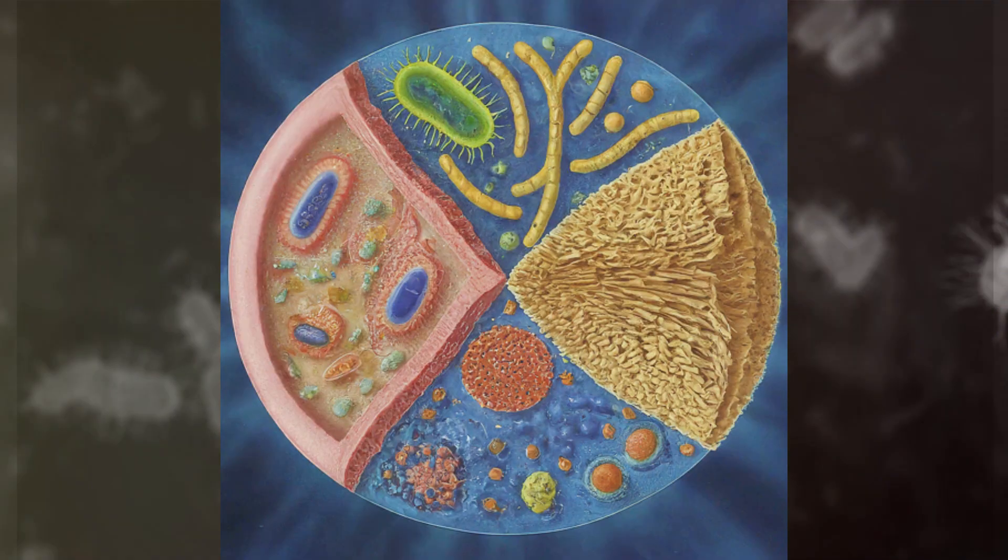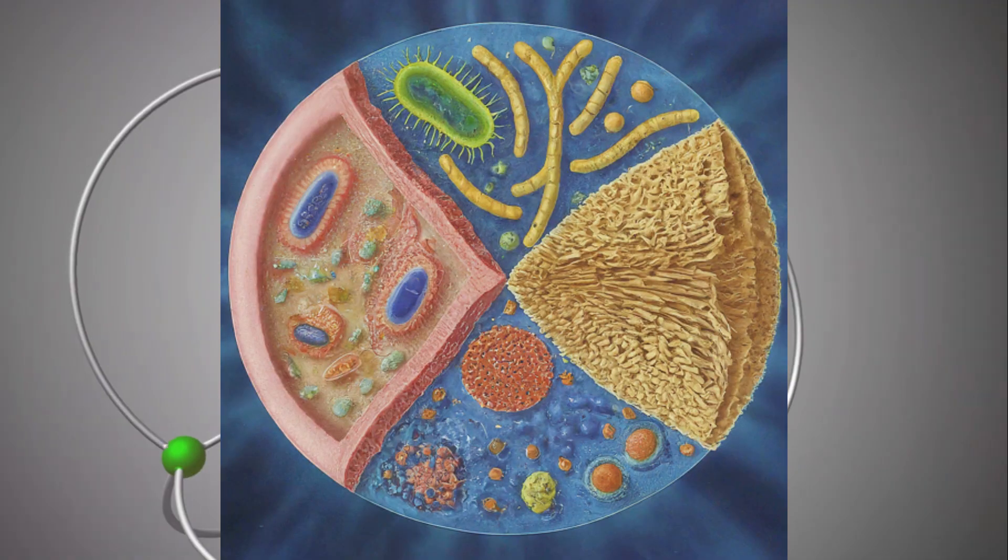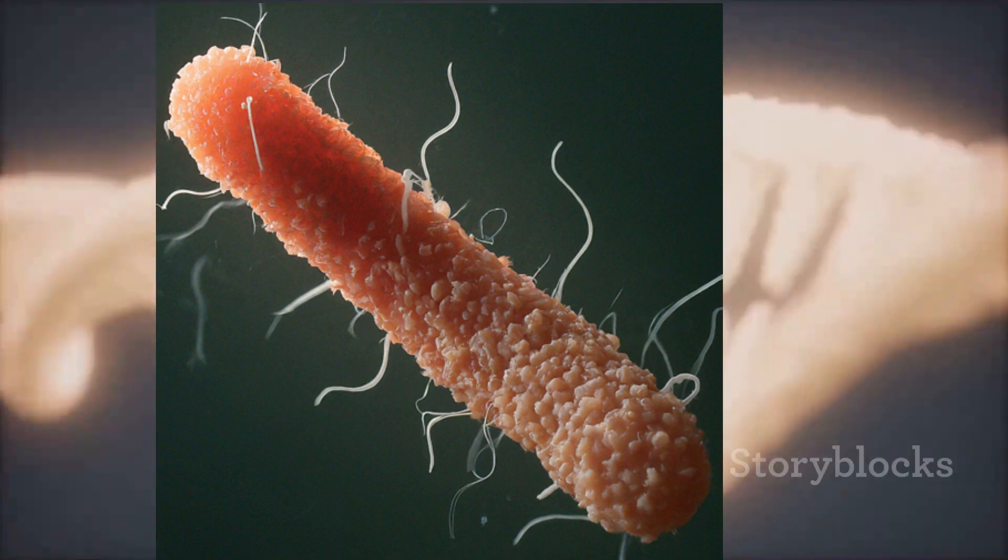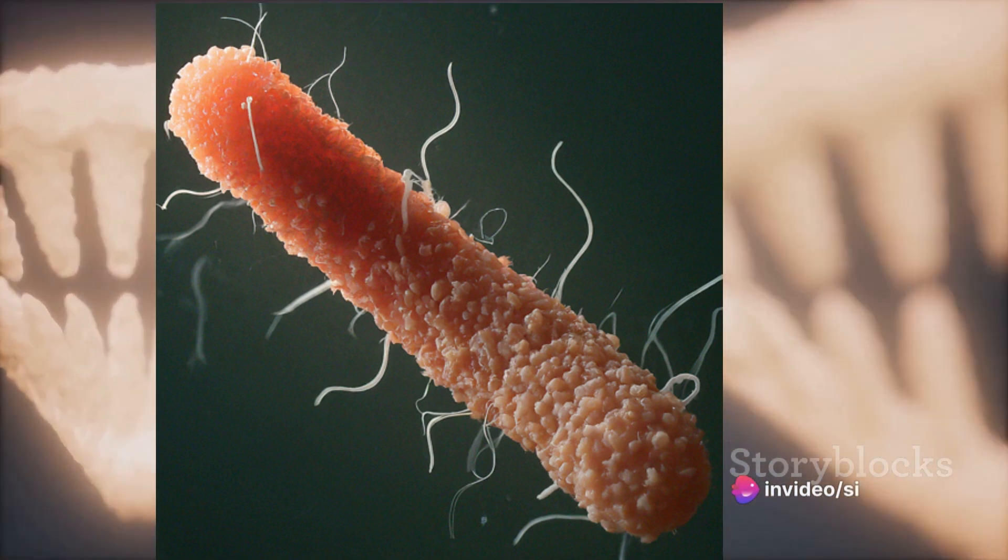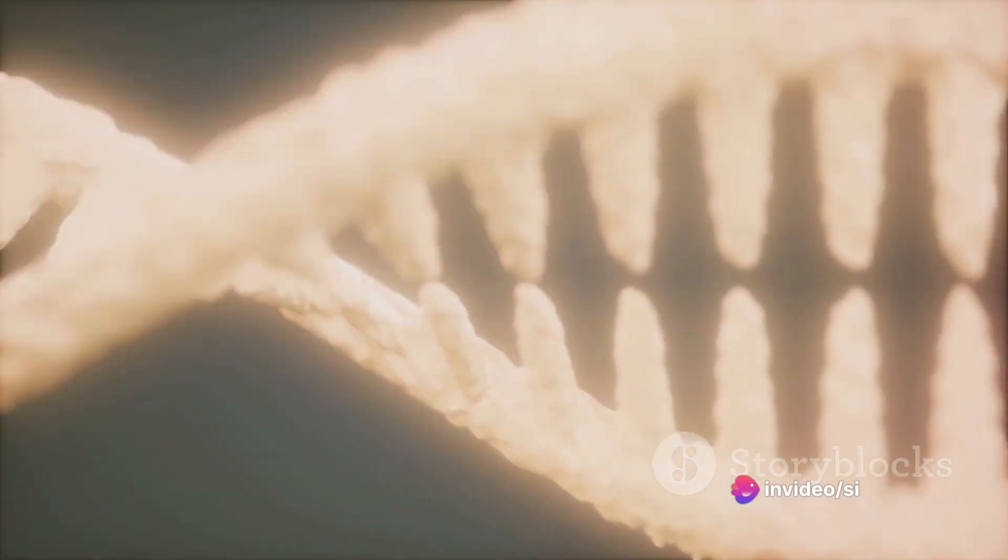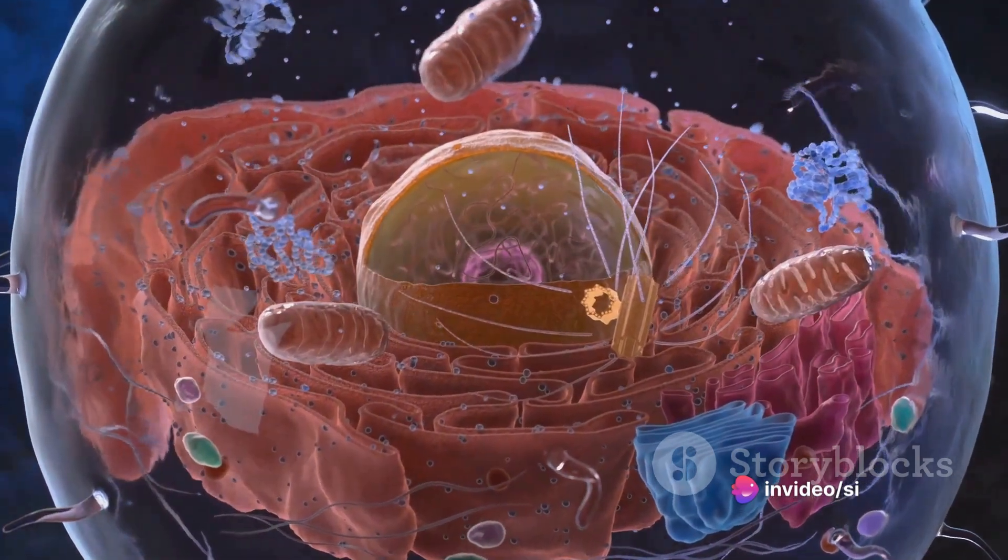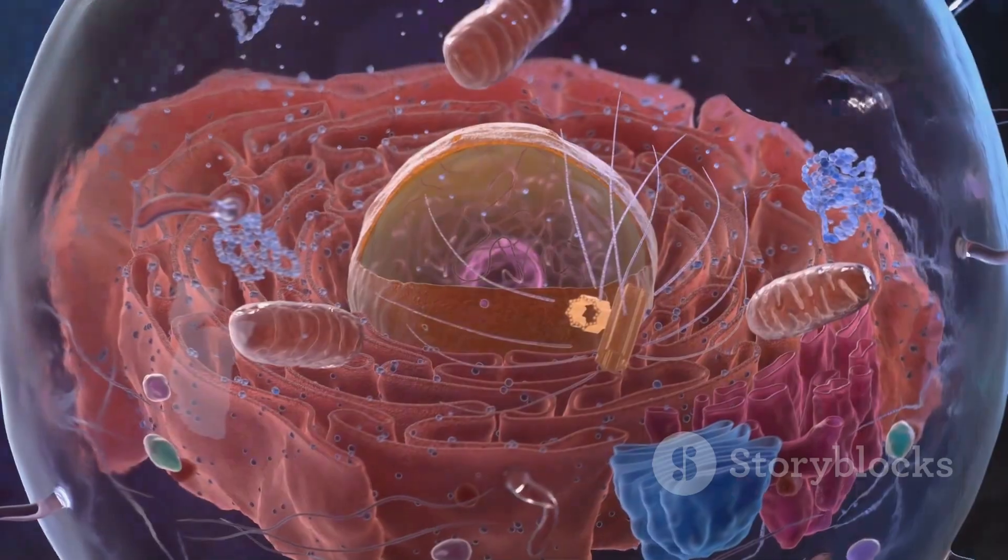But not all cells have a nucleus. Prokaryotic cells, like bacteria, lack a well-defined nucleus. Instead, their DNA floats freely in a region known as the nucleoid. This is a key difference between prokaryotes and eukaryotes, which have a well-defined nucleus.